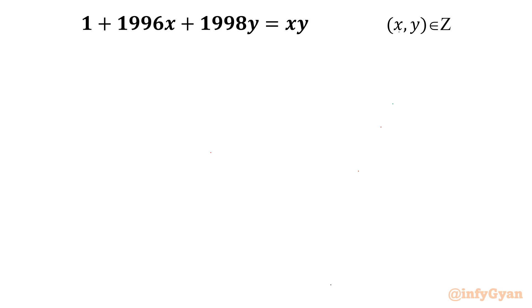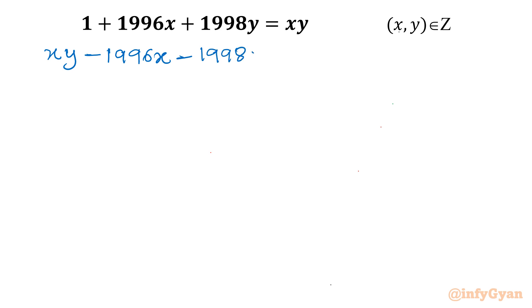Consider all the terms to the right-hand side. So I will write our equation as xy minus 1996x minus 1998y minus 1 equal to 0.